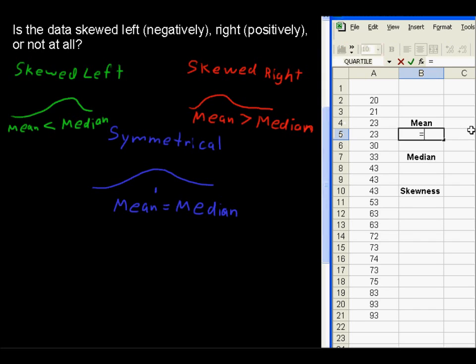Let's find the mean. In Excel, that is equals average, A-V-E, A-G-E. Or, of course, you can find that on the F of X button. Equals average of what? I open up the parentheses, and then I choose all of this data, and then close the parentheses. We're good.